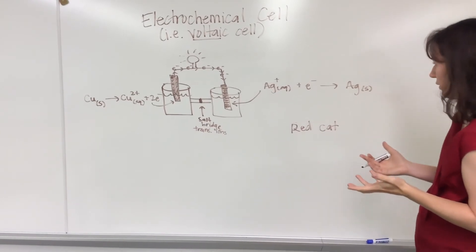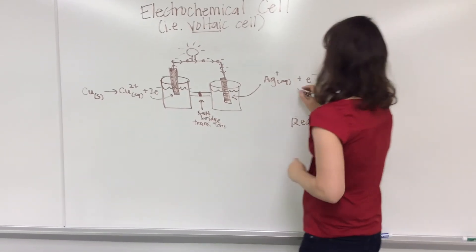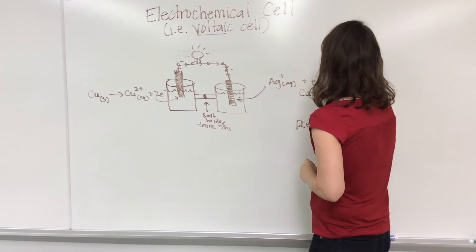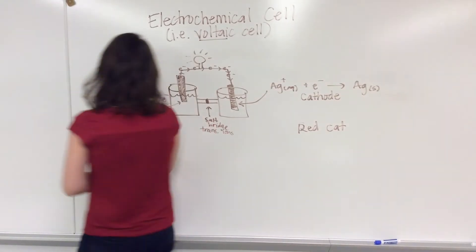So which one of these is reduction? This is reduction. Therefore, this is the cathode and this is the anode.